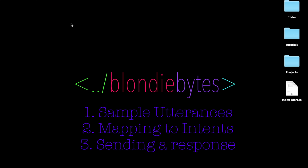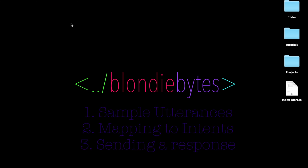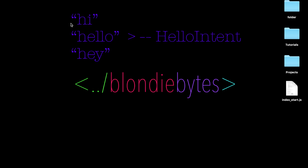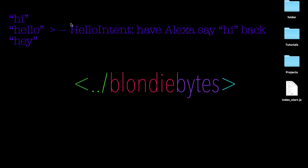The second part of making our Amazon Echo skill is going to be mapping these utterances to intents. I can say a bunch of things to my Echo — I could say hi, I could say hello, I could say hey — and all three of these are going to mean the same thing. No matter which one I say, I should get the same response back from the Echo. All three of those utterances should be mapped to the same intent.